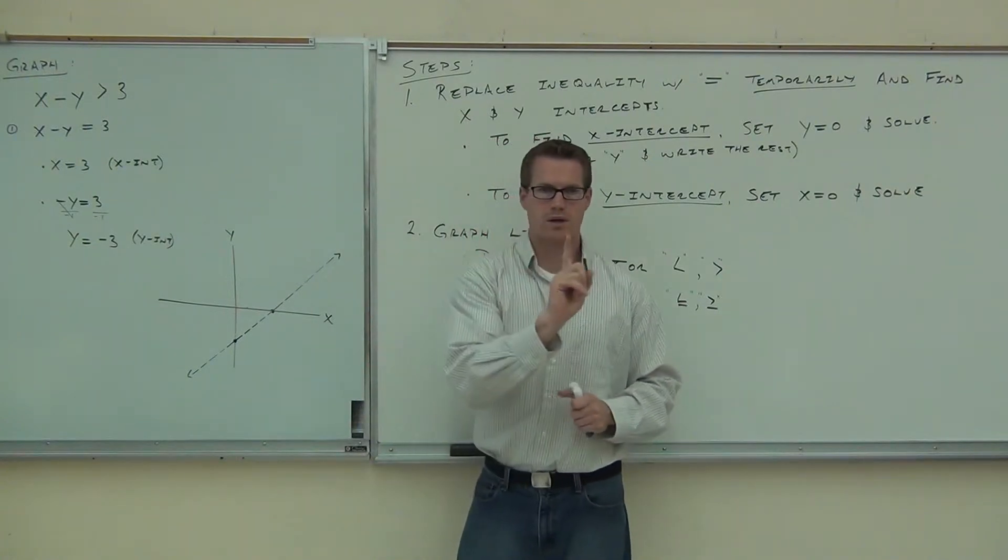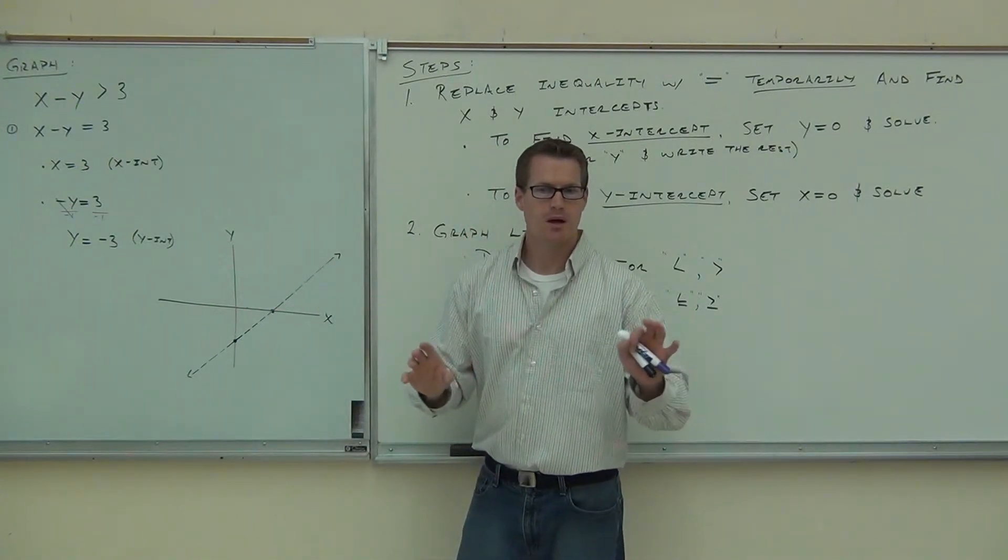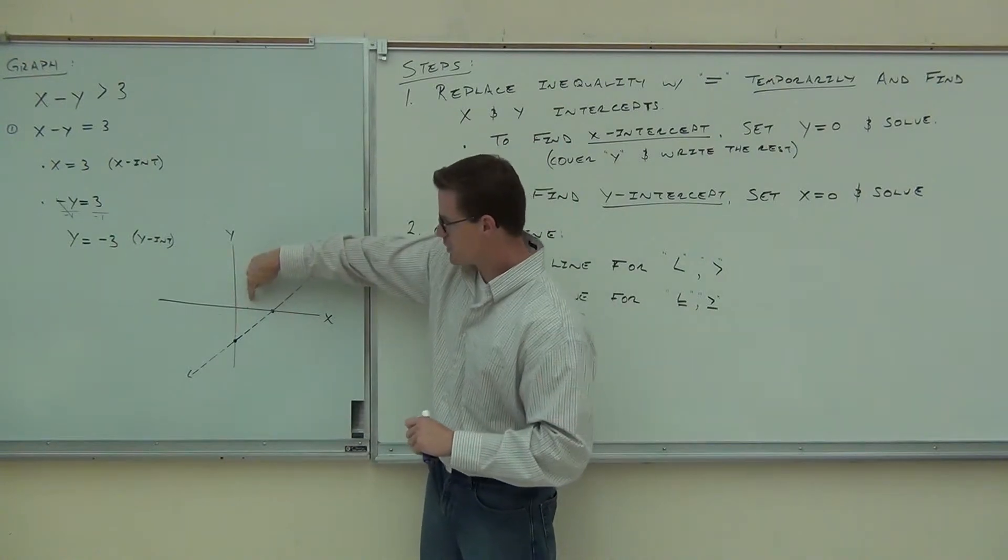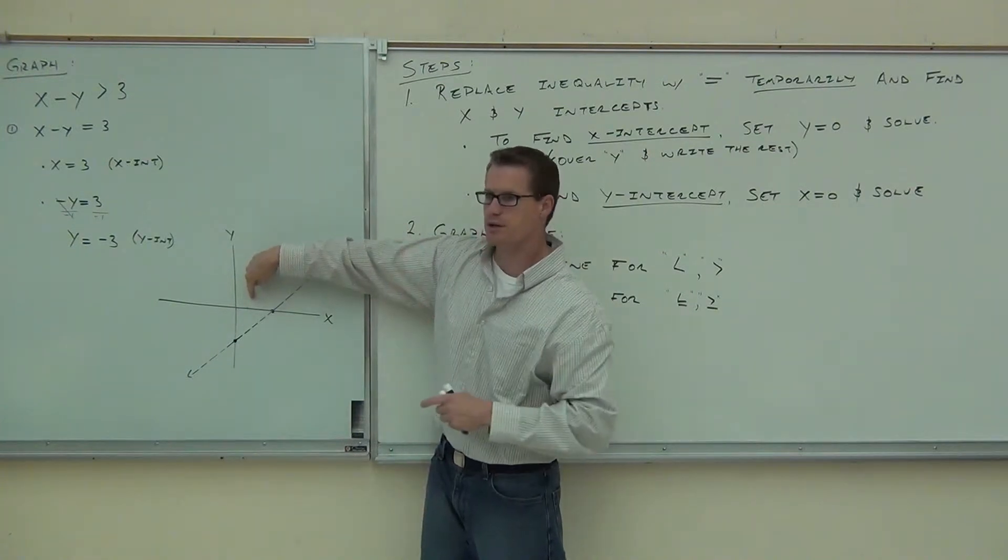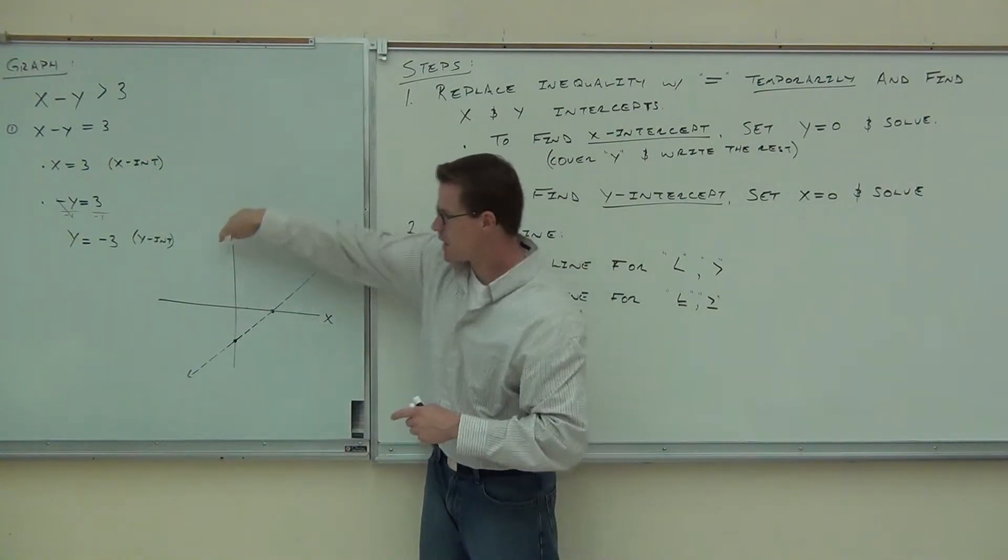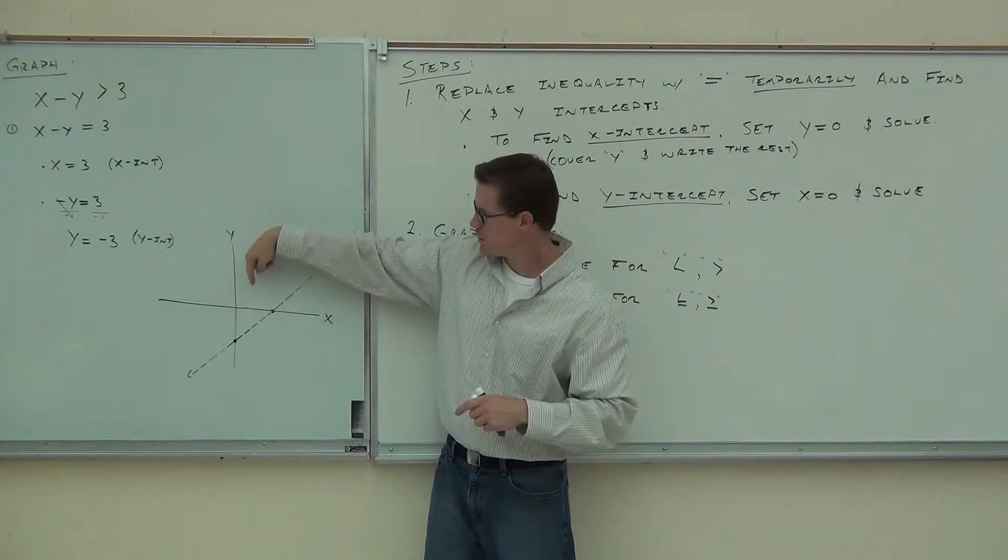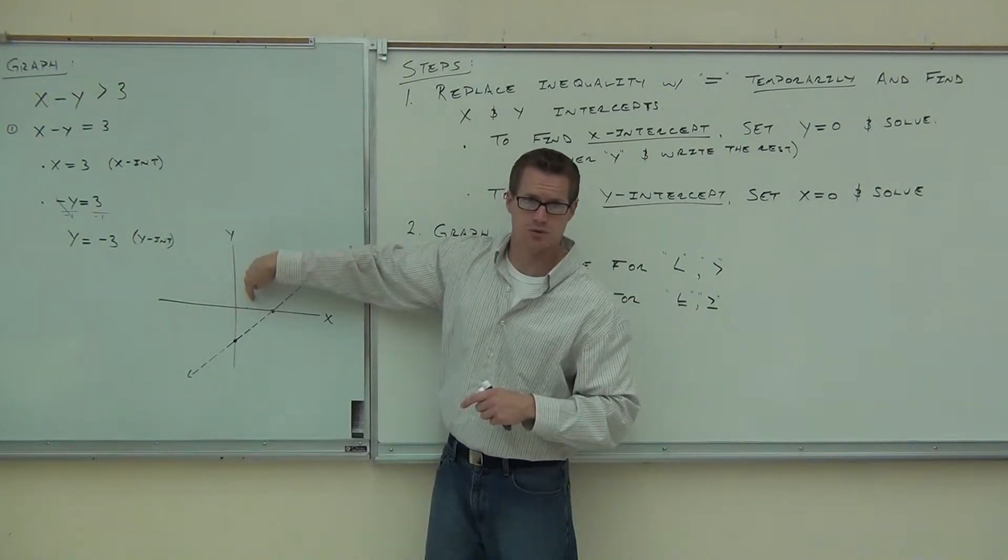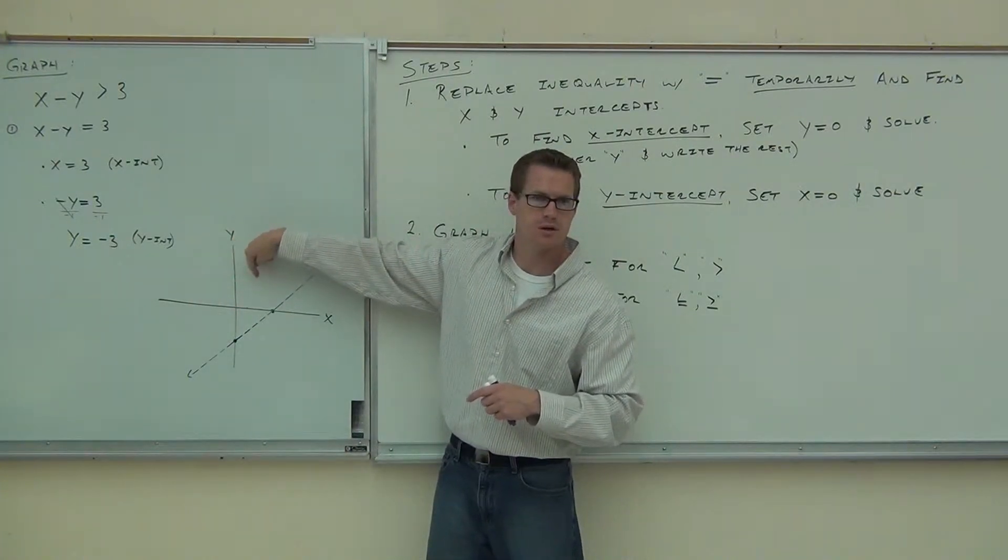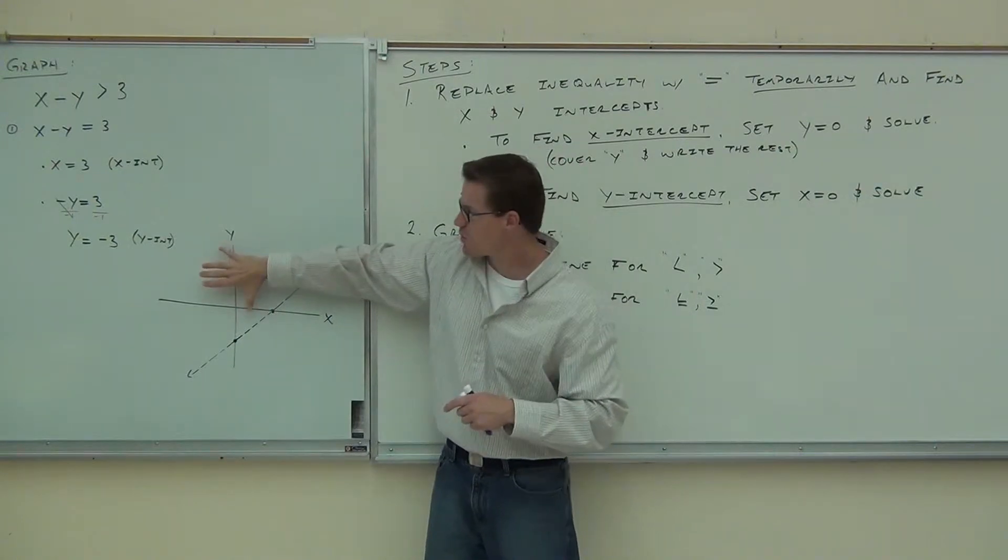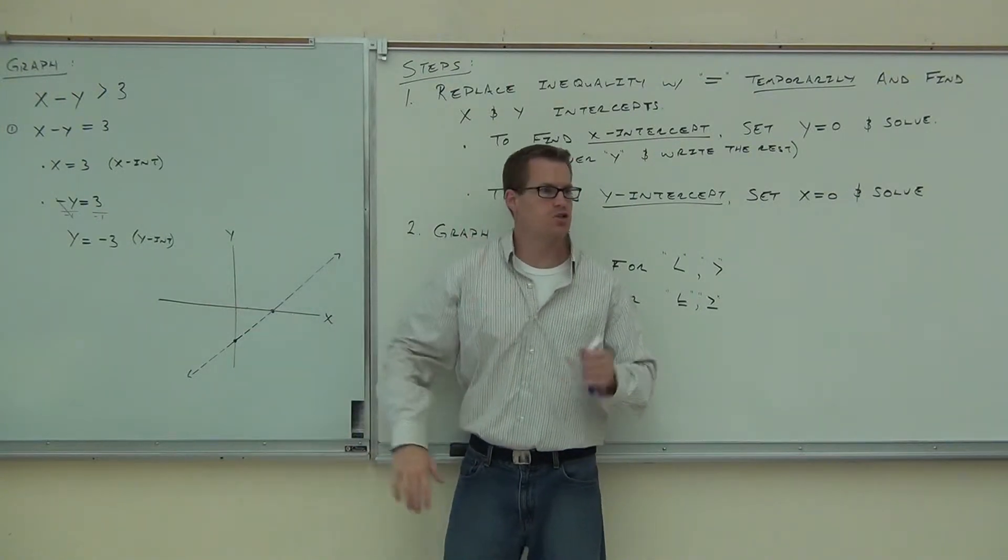What we're going to do is check one point on this graph. Pick any one you want. Let's say that this one is the point that you pick. One comma one. If this point works in your inequality, every point on this side is also going to work. And we're going to shade that entire side. You with me? But let's say that this is not true. Let's say this is false. What that means is every point on this side is also going to be false. One side has to be true. One side has to be false. If this side is false, this side is true.